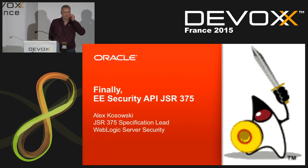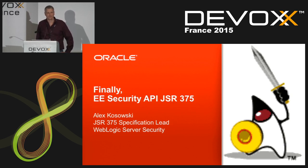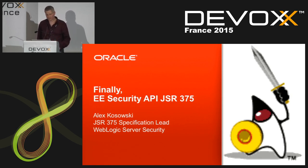Good afternoon and welcome. My name is Alex Kosowski, and I am going to present to you today about a new JSR we're working on called the EE Security API JSR, DSR 375. It's a brand new JSR and I happen to be the JSR 375 specification lead. I also happen to be on the Oracle WebLogic security team.